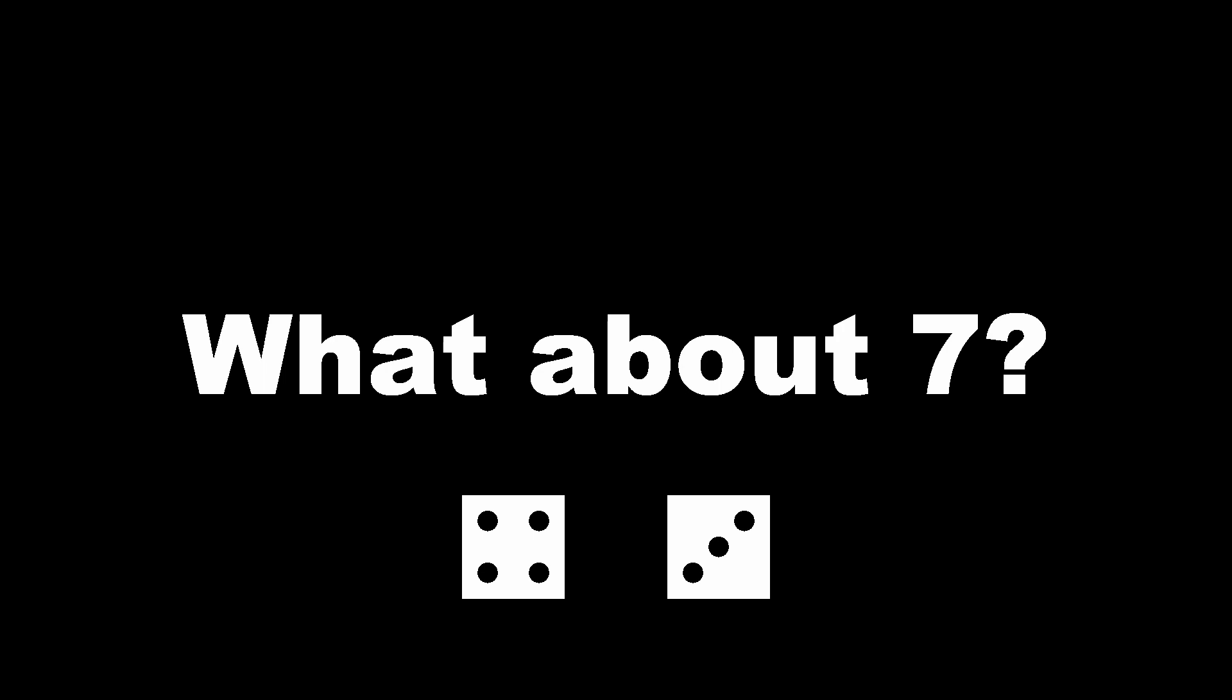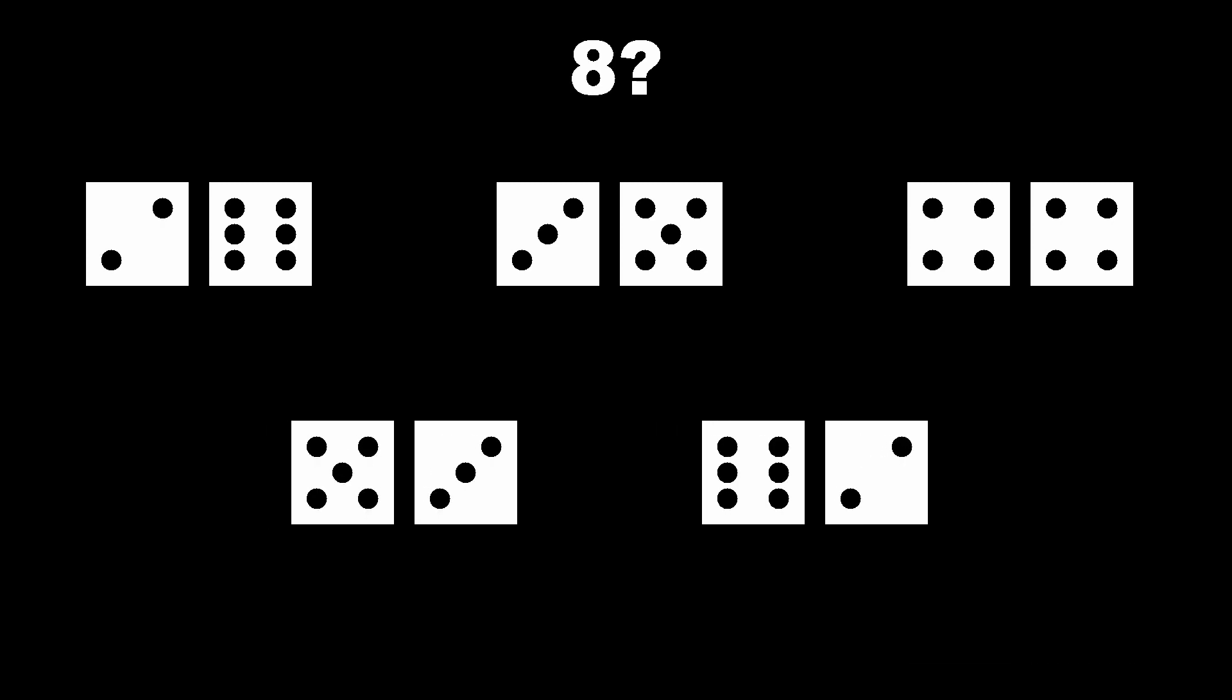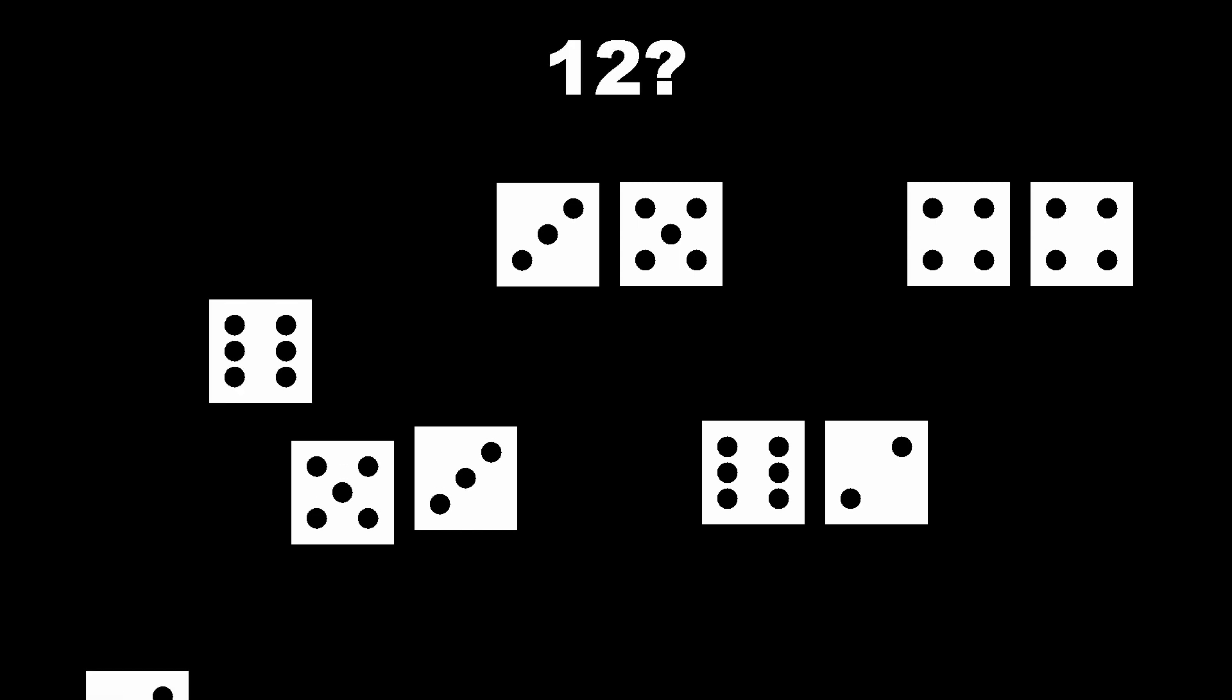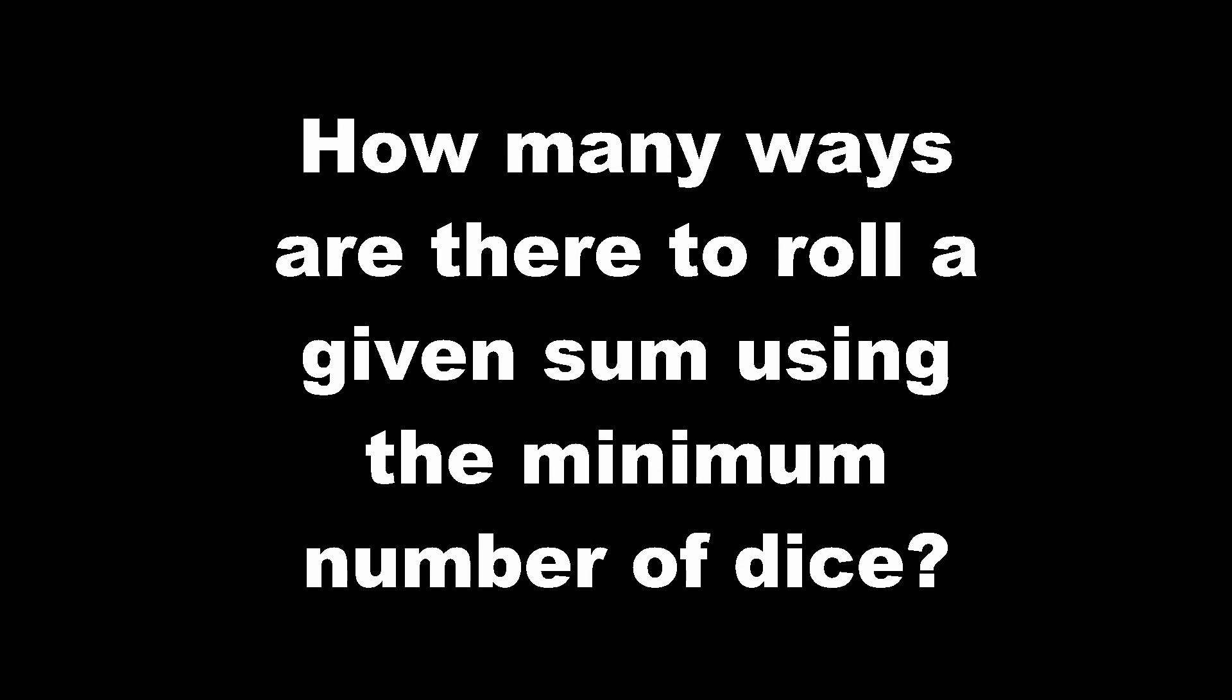One way to get a solution is simply by listing die rolls and counting each sum. It so happens that there are six ways of rolling this total. For a total of eight, there are five ways, and it keeps going like this until we get all the way to a total of 12, with one way to roll this total, six and six. In other words, for the more general equation, how many ways are there to roll a given sum using the minimum number of dice?